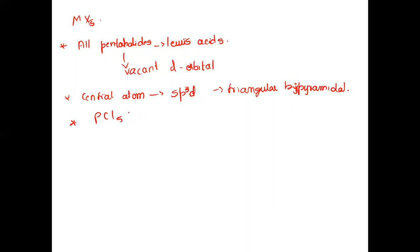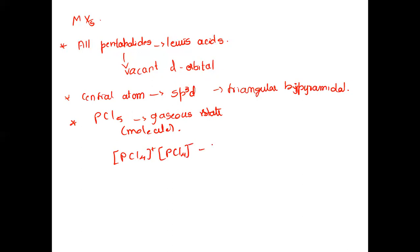PCl5 is an important example. In gaseous state, PCl5 exists as a molecule. In solid state, it is ionic in nature — it exists as PCl4+ and PCl6-. Phosphorus pentabromide and phosphorus pentaiodide also exist in ionic form in solid state.